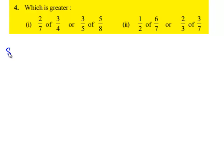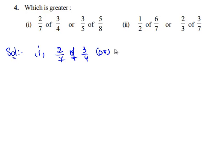So let us take down the first bit. We need to find which is greater among 2 by 7 of 3 by 4 and 3 by 5 of 5 by 8.